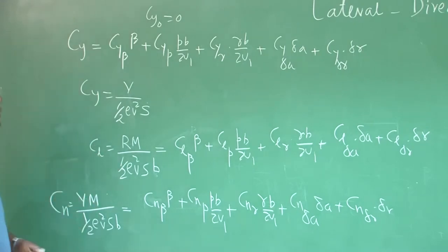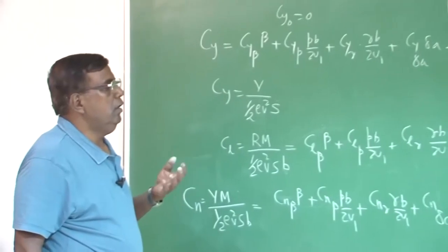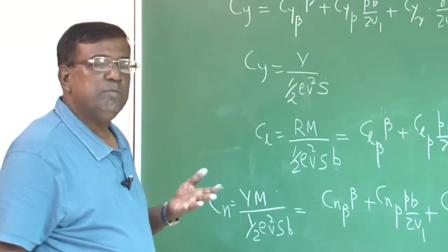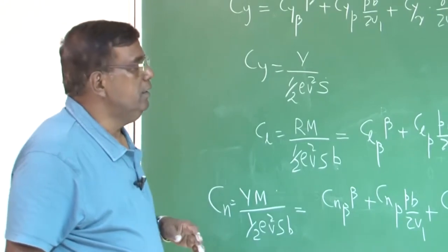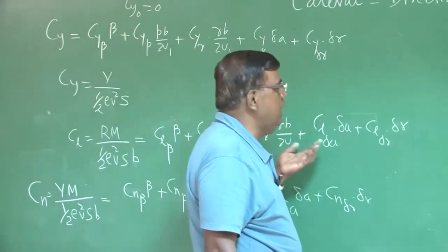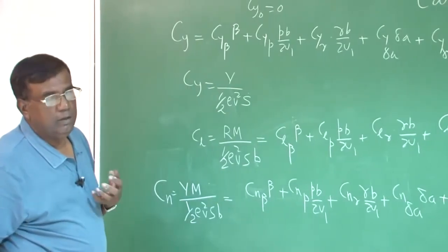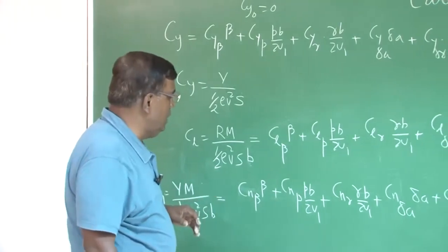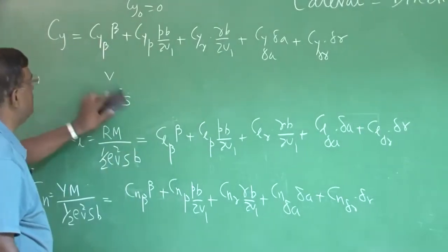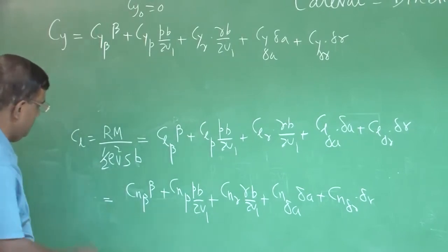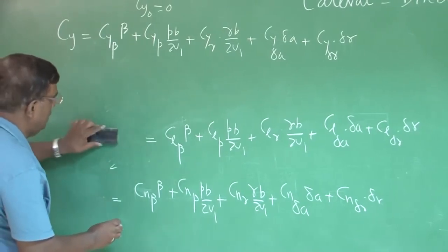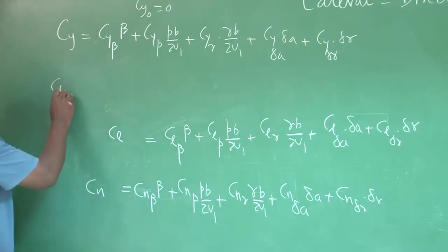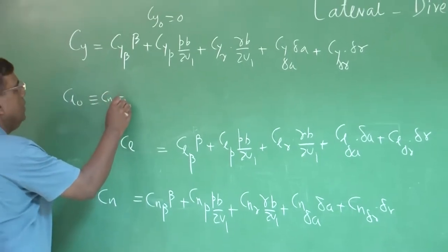Please understand this sort of expansion is strictly true for low-speed and moderate-performance airplanes, where we are assuming everything to be linear. Modern aircraft are very high performance with high rates and high angle of attack, so writing or expanding these in terms of linearized concepts may not be true, unless you cleverly and judiciously locally linearize it. It goes without saying that we have put Cl0 and Cn0 identically equal to zero.